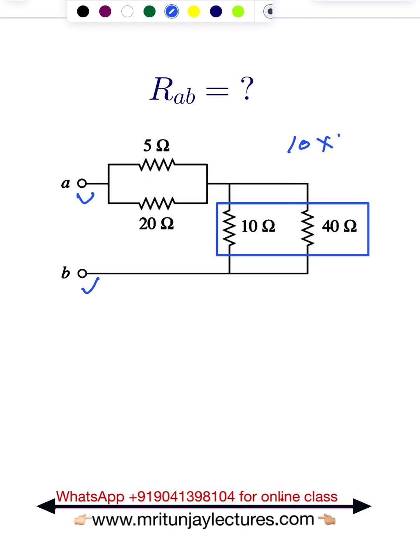Clear? So what about that combination? Simply 8 ohm. Now, next target: if you see these two resistors, they are also in parallel.